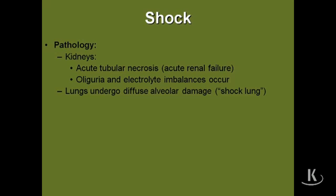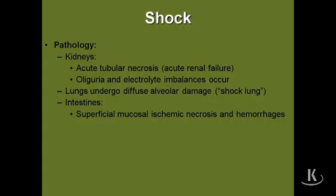In the lung, damage to endothelial cells within the capillary lumen of the alveolar walls leads to shock lung, diffuse alveolar damage, or ARDS — acute respiratory distress syndrome. In the intestines, the mucosa is vulnerable because it's the last place to get oxygen. Shock leads to mucosal damage — superficial mucosal ischemic necrosis. In the colon, this can be one mechanism leading to pseudomembranous colitis through ischemia, not only from Clostridium difficile due to antibiotic-related changes in normal flora, but also from ischemic causes.